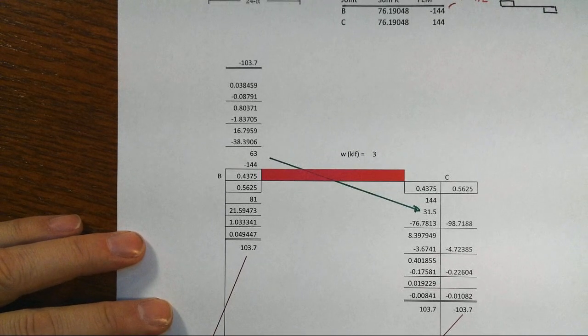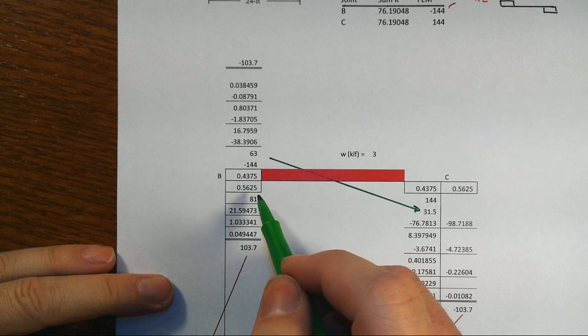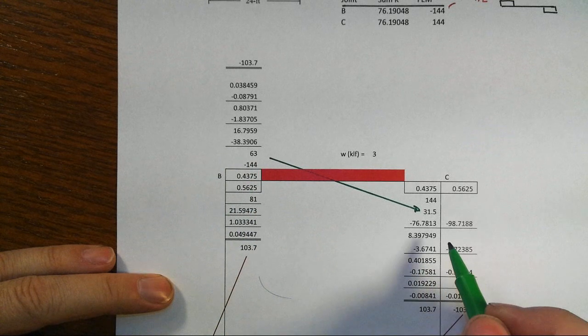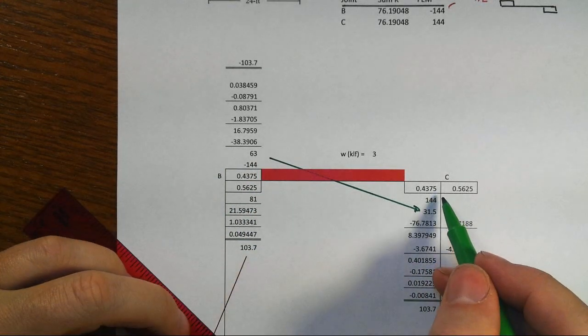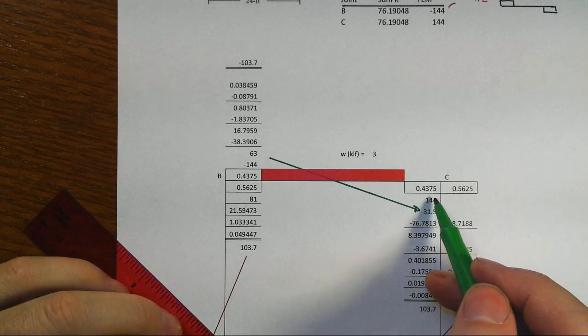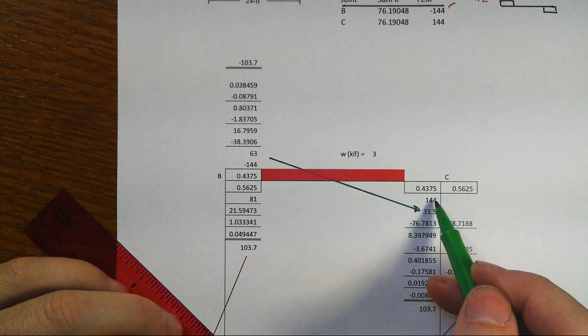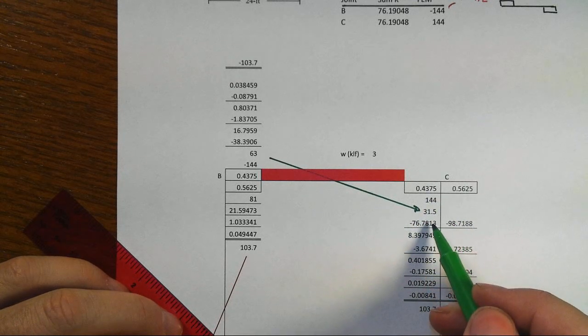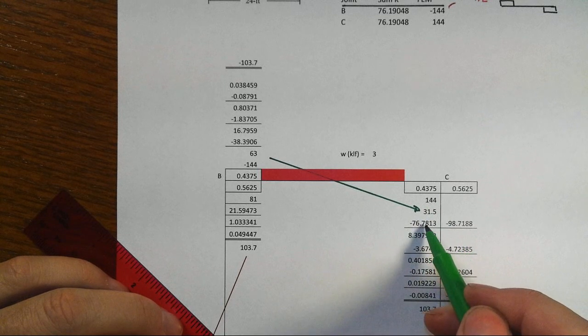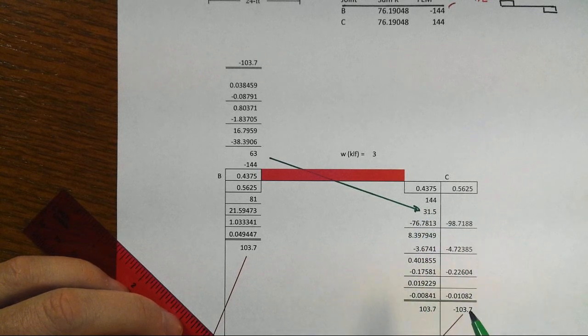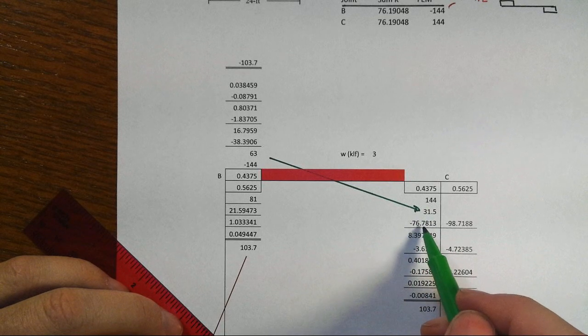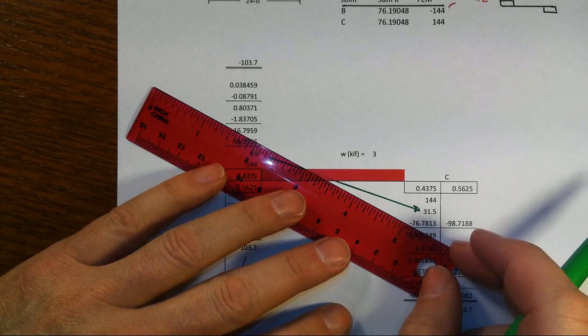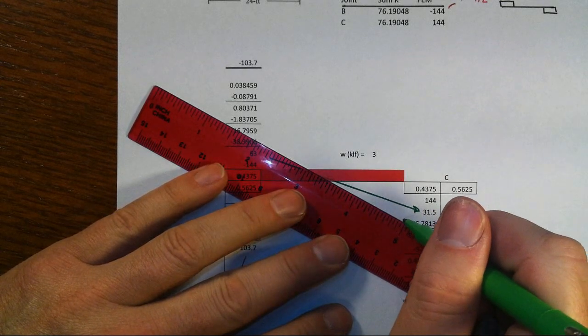So that's where the 81 and the 63 come. We put the joint in equilibrium. We've not ever released joint C yet. Let's come over here, sum up all of the effects that are not equilibrated yet, that's the 144 plus 31.5. Then multiply by the distribution factor, taking the opposing values, meaning negative. And that gets at these two, negative 76.7 and so on. And now I take that, and because I've locked down everything else, I'm going to show this as a dashed line coming back the other way.